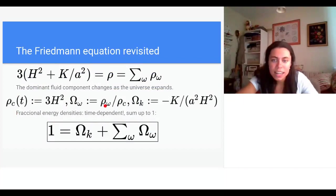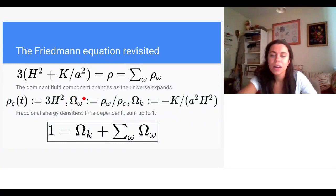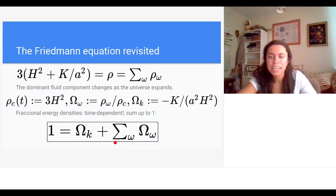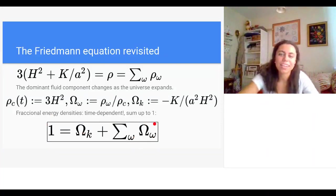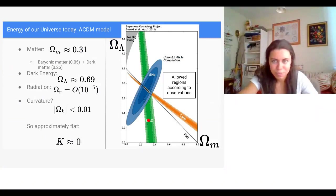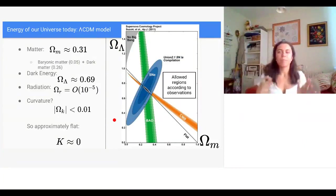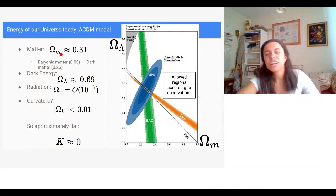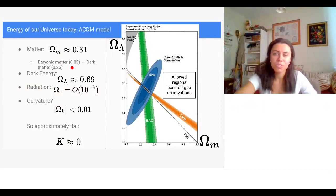We can rescale the energy density of all fluid components by the critical energy density ρ_c to obtain fractional energy densities Ω, which are time-dependent functions. The Friedmann equation then takes the nice form where all the Omegas sum to one. These fractional energy densities are observable quantities.